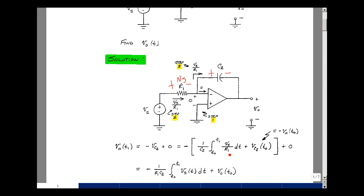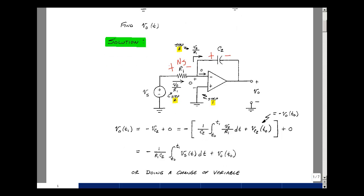Now R1 is not a function of time, so we'll bring that out in front. So I've got a minus 1 over R1 C2, integral from T0 to T1, of V sub s of T, dt, plus the initial voltage at the output of the op-amp.